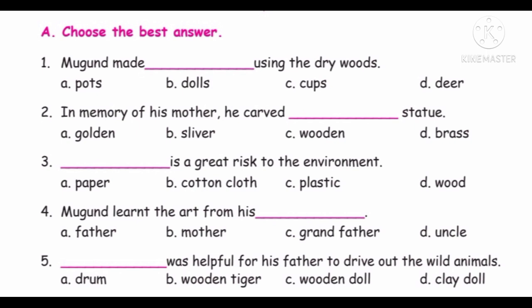Choose the best answer. First question: Muhun made dash using the dry woods. Options: Pots, Dolls, Cups, Deer. Muhun made dolls using dry woods — the answer is dolls. Muhun made dolls using the dry woods.